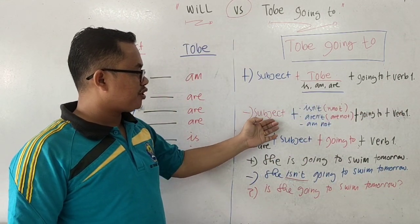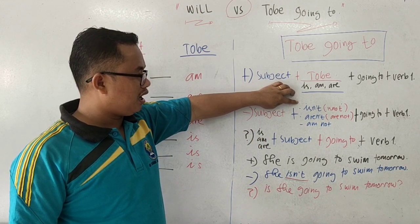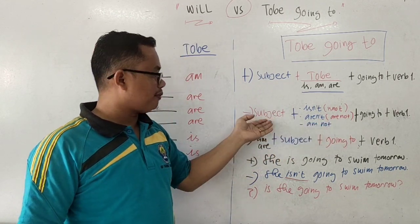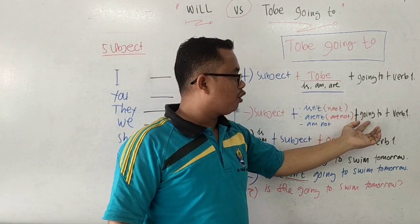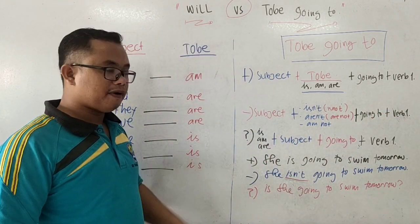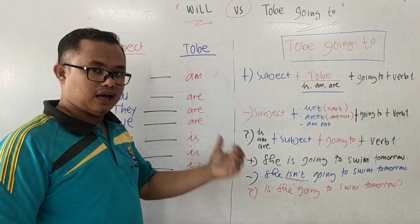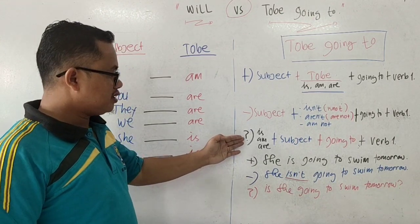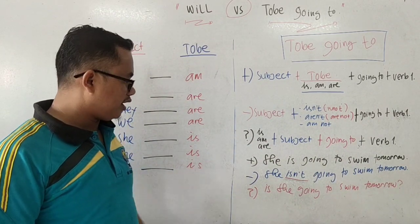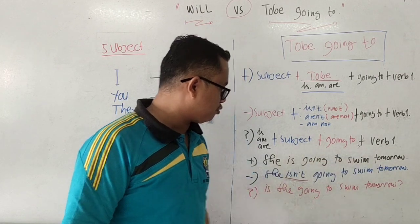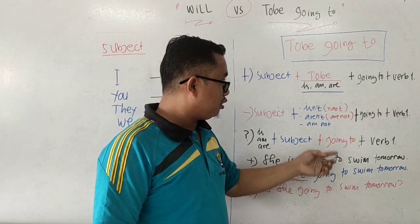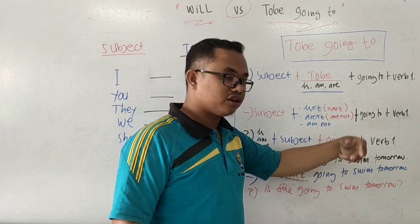For the interrogative form: Is/Am/Are + subject + going to + verb 1? Now for the positive example: 'She is going to swim tomorrow.' Here 'she' is the subject, 'is' is the to be, 'going to' is the formula part, 'swim' is verb 1, and 'tomorrow' is the time description. So it means: 'Dia akan berenang besok' — she is going to swim tomorrow.